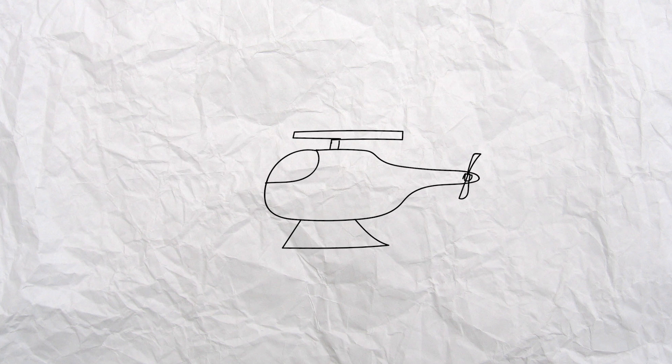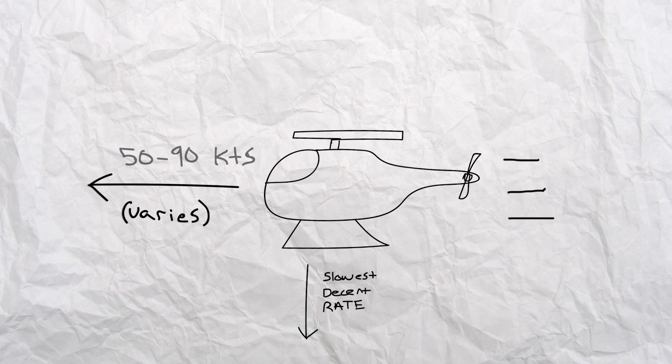Dependent upon these factors, there is a certain forward airspeed for every helicopter that creates the slowest and safest descent during autorotation. This forward airspeed usually varies anywhere from 50 to 90 knots.